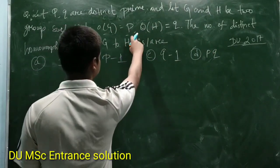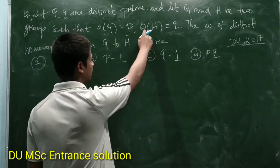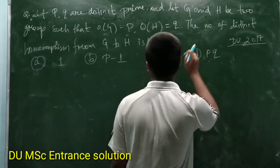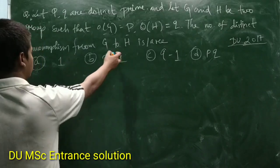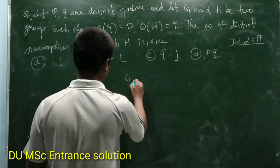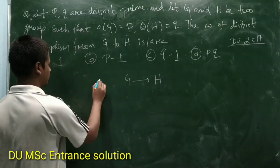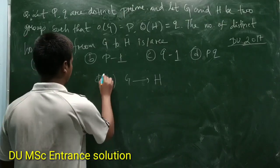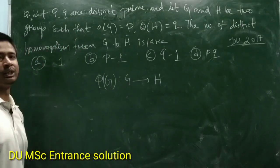such that order of G is given as P and order of H is given as Q. The number of distinct homomorphisms from G to H - they are asking number of homomorphisms from G to H.